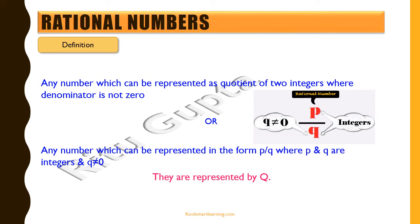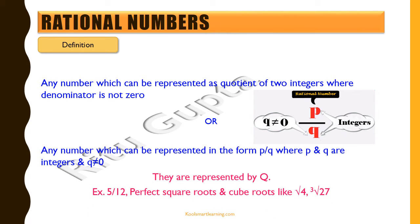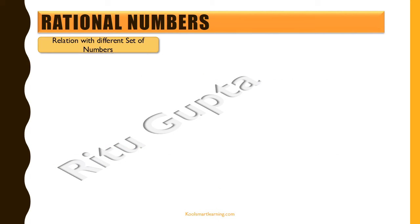Rational numbers are represented by the capital Q. Examples of rational numbers would be numbers like 5 by 12, 2 by 3, and perfect square roots and cube roots like square root of 4 and cube root of 27. All of these are rational numbers.